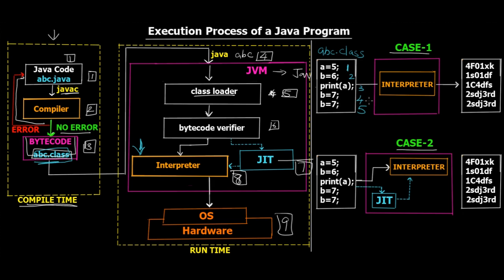Notice in case one: the last two lines, line four and five, are b equals seven repeated twice. This means the programmer has accidentally duplicated that line. Since there is no smart compilation, the interpreter treats this as a separate line and generates the same output twice — which is unnecessary. It should have been just one line, saving one instruction.